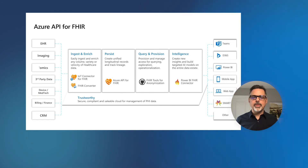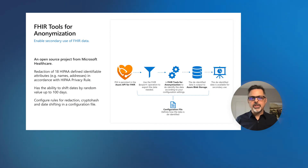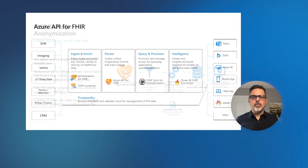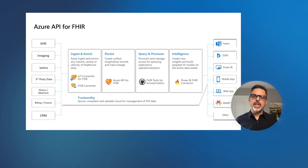Once data is in the system, you have the ability to query that data and export it for secondary use scenarios. According to the HIPAA privacy rule, any secondary use of data requires that it be de-identified in the appropriate way. The FHIR tools for anonymization is an open source project we've built to support a variety of different techniques for the de-identification and anonymization of protected health information. The Azure API for FHIR implements an export operation according to the FHIR specification using the $export operator, with the option to apply the FHIR tools for anonymization to de-identify data on export. This is perfect for secondary use cases where you want to export data while abiding by the HIPAA privacy rule.